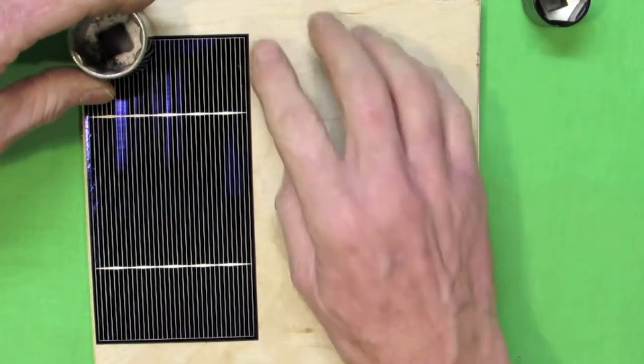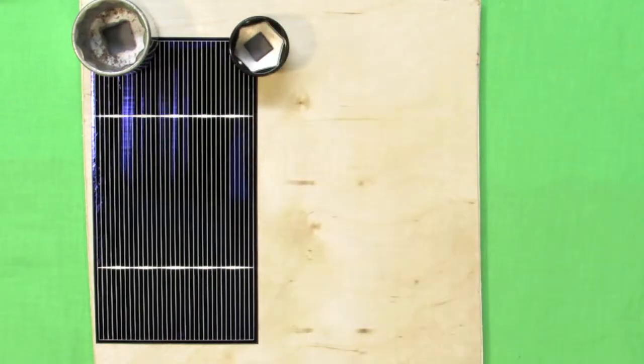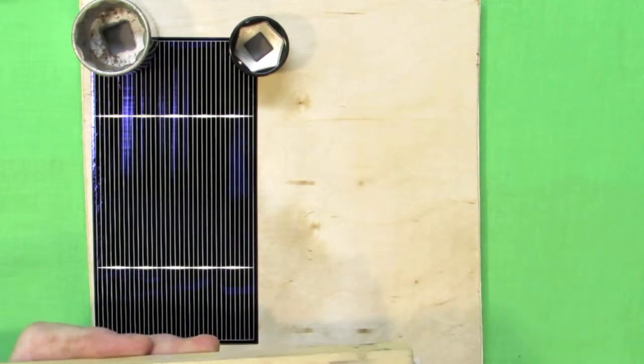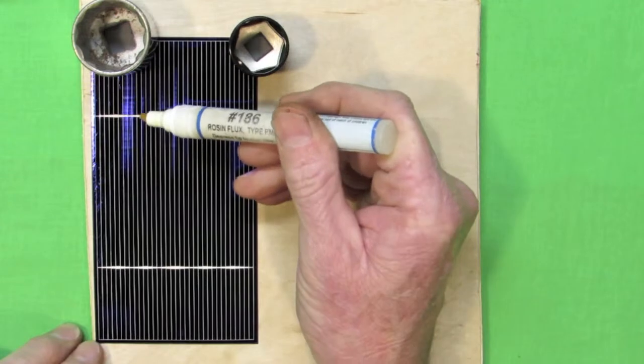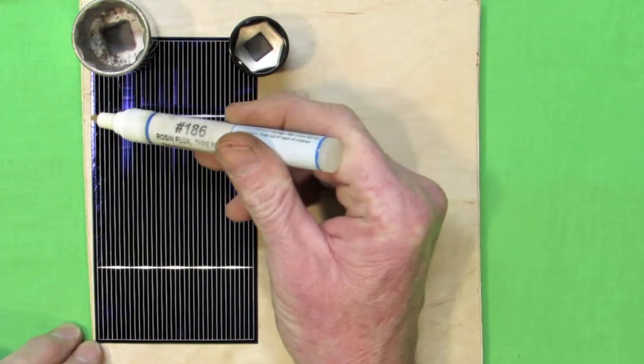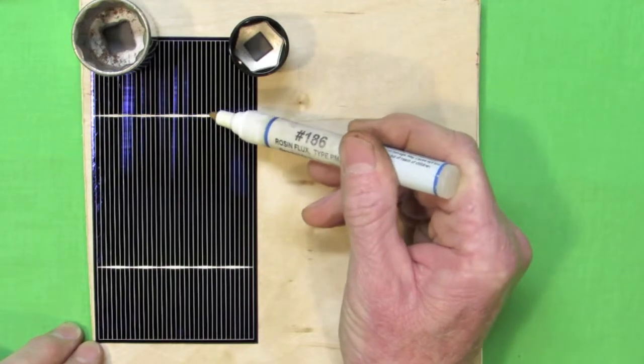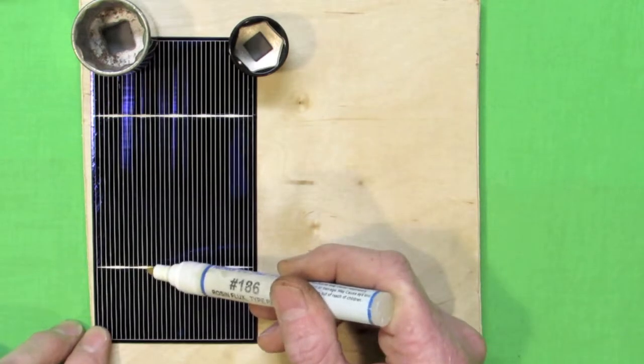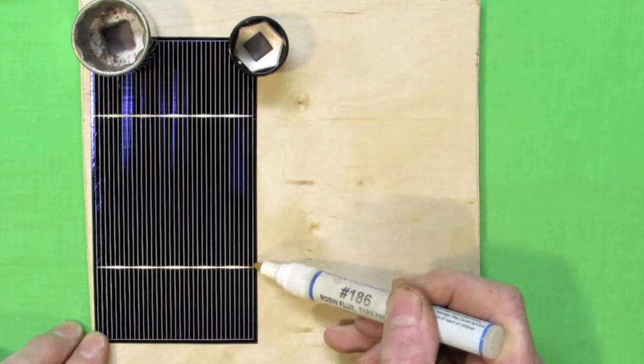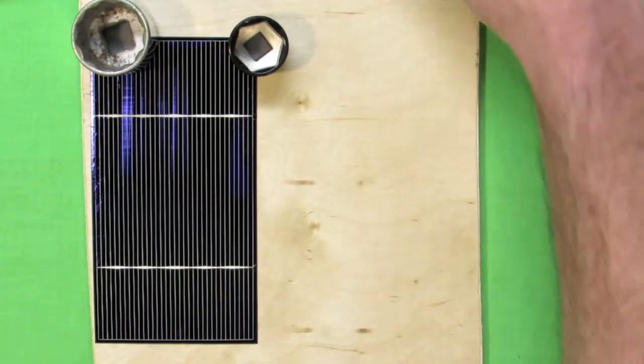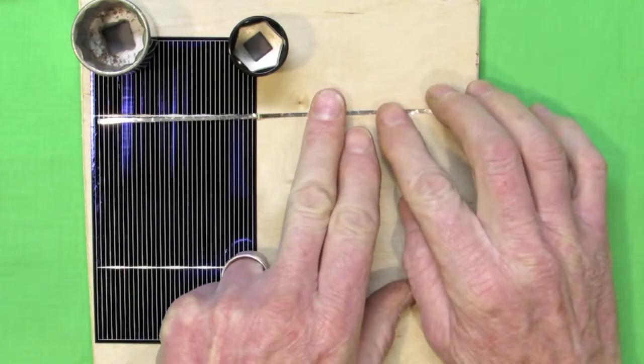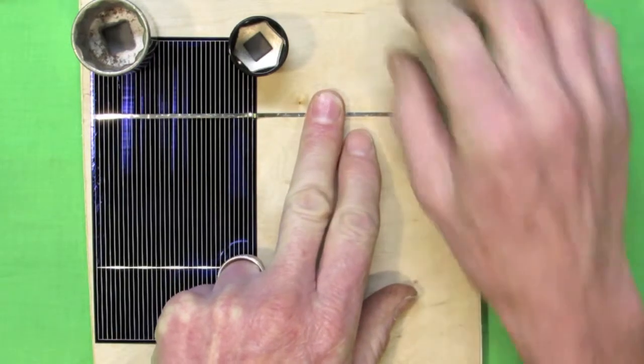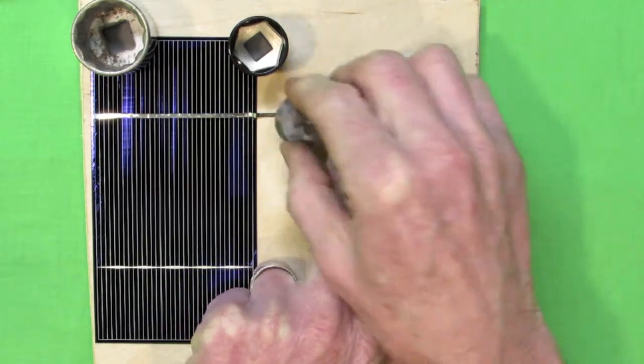The only thing that would be different if you were working on another solar panel would be perhaps you might be using a monocrystalline solar cell with different measurements. Now notice what I'm doing here. Every time I bring the solder gun into play I always wet the rosin solder flux pen, and then I apply it to the solar cell and in particular the bus bar on the solar cell. By wetting the flux pen on cardboard or a piece of wood, you're causing the tip to absorb that flux material so that when you run the pen across the surface of the bus bar you're not having to apply pressure.